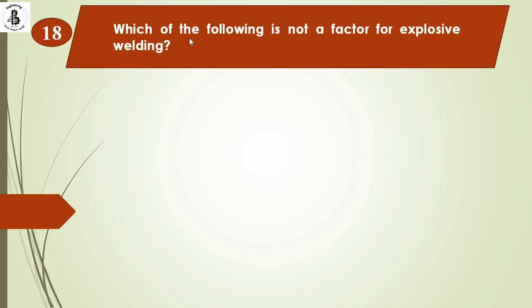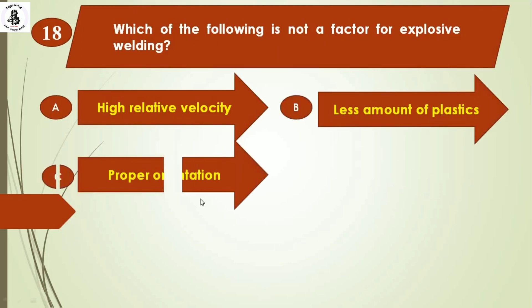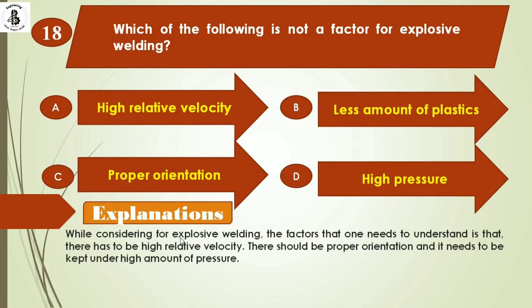Next question: which of the following is NOT a factor for explosive welding? Option A: high relative velocity. Option B: less amount of plastics. Option C: proper orientation. Option D: high pressure. The factors for explosive welding include high relative velocity, proper orientation, and high pressure. Less amount of plastics is not a factor. So the right answer is option B.